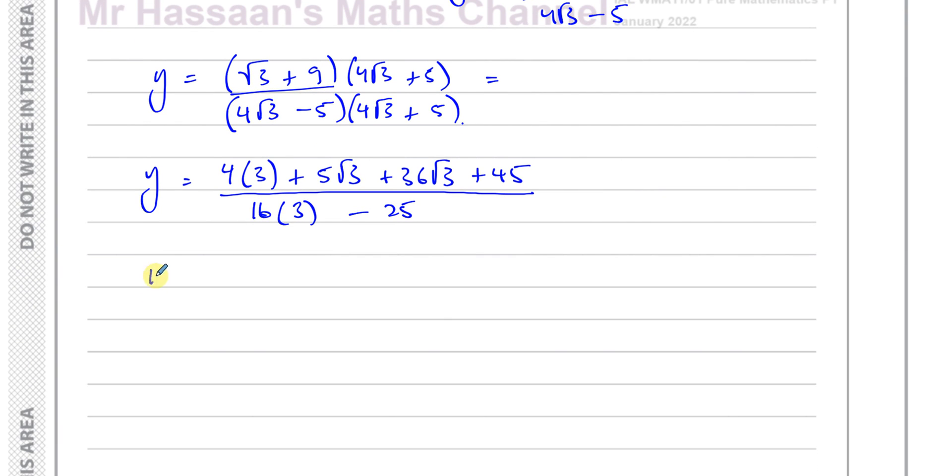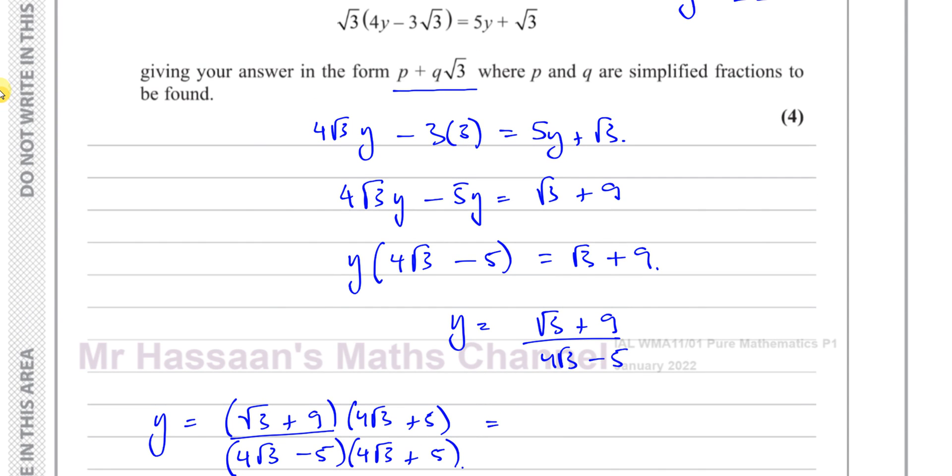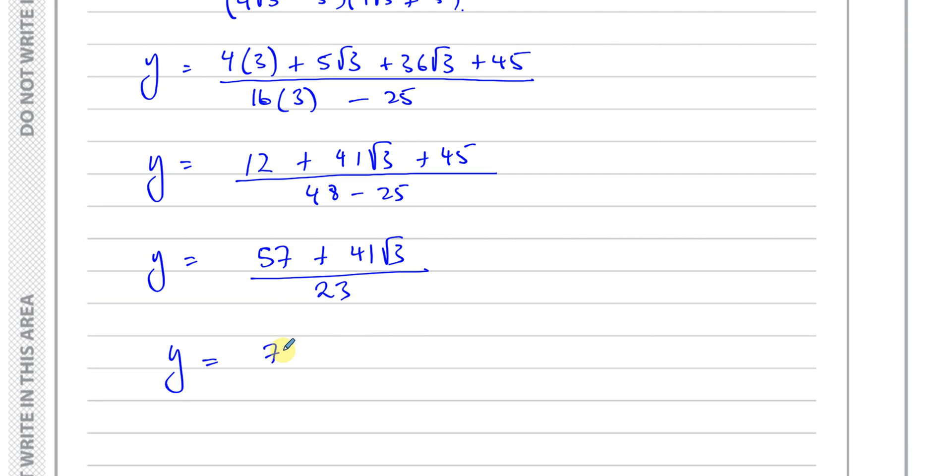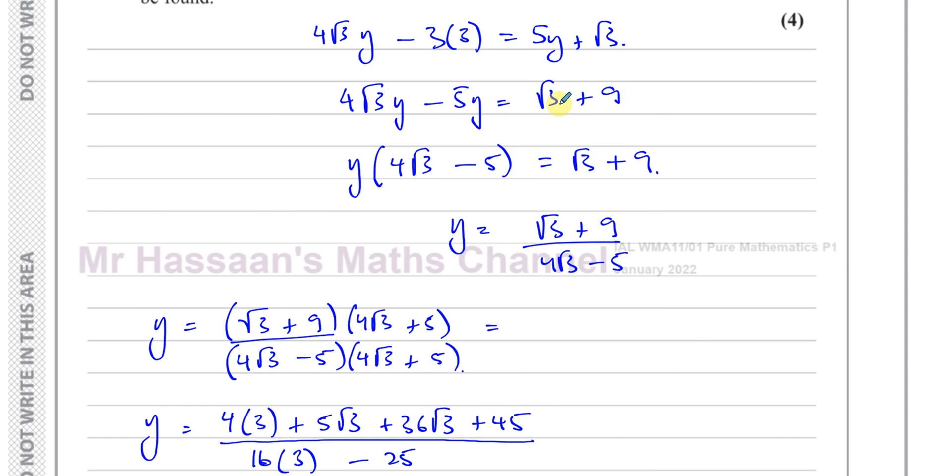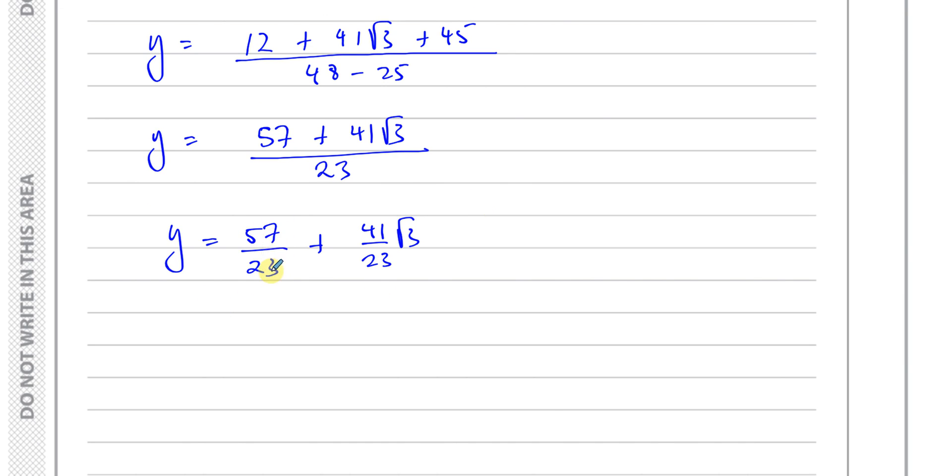We're almost there. Let's simplify this. This gives me 12 + 41√3 + 45 over 48 - 25, which is going to give me 23. So I have y equals 12 plus 45 is 57. 57 + 41√3 over 23. We want to express it as separate fractions. P and Q are simplified fractions. So we've got to write this as two separate terms. So this is 57/23 + (41/23)√3. P + Q√3 where P and Q are simplified fractions to be found. I don't think we can simplify these two fractions. There's no common factor in them. So that's the answer in the form required.